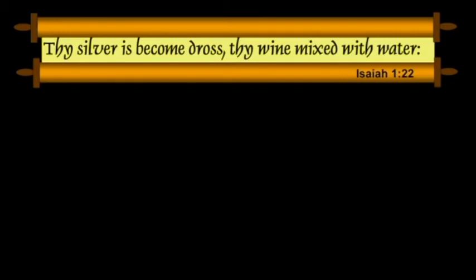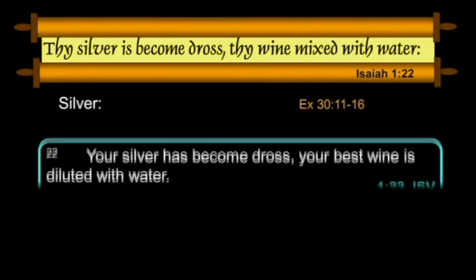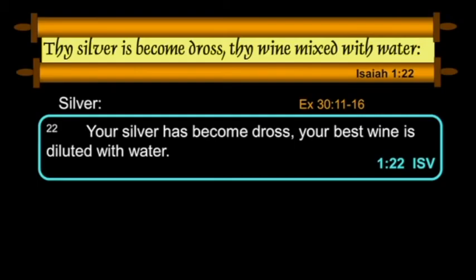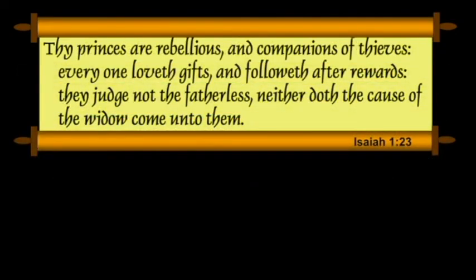"Thy silver has become dross, thy wine mixed with water." Silver, of course, is the emblem of redemption. The ISV: "Your silver has become dross, and your best wine is diluted with water." Verse 23: "Thy princes are rebellious, companions of thieves. Every one loveth gifts, and followeth after rewards. They judge not the fatherless, neither doth the cause of the widow come unto them." Since the corruption of the nation generally begins with its rulers, Isaiah singles these out for denunciation.